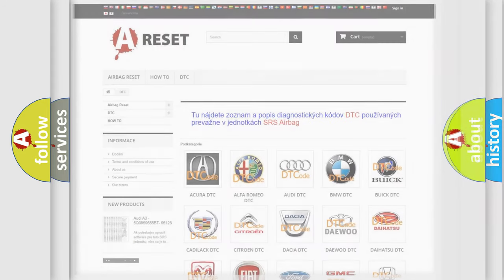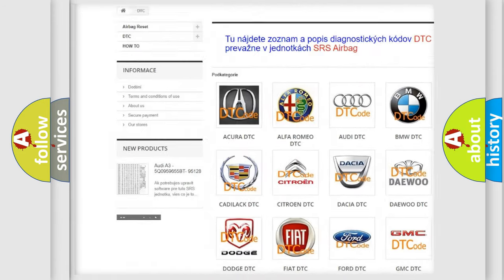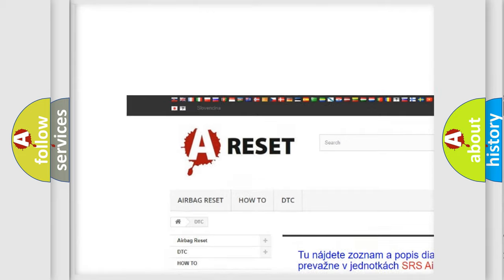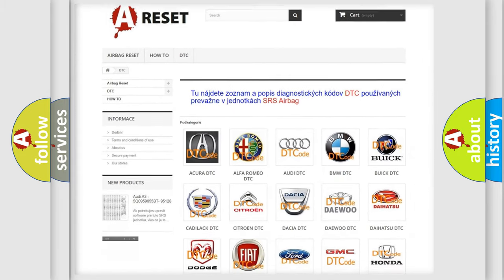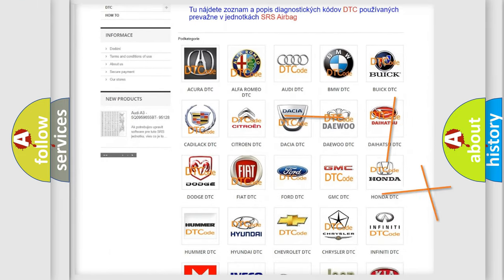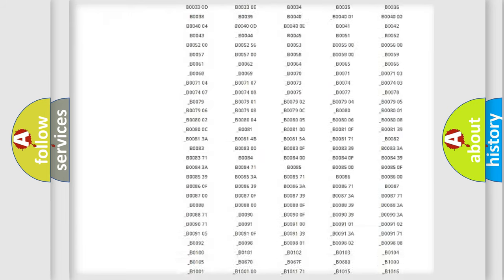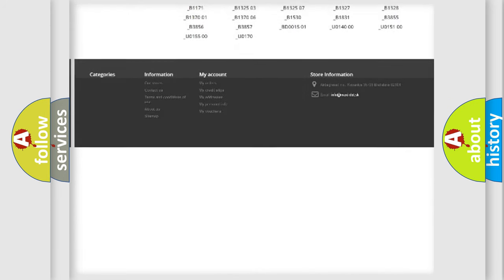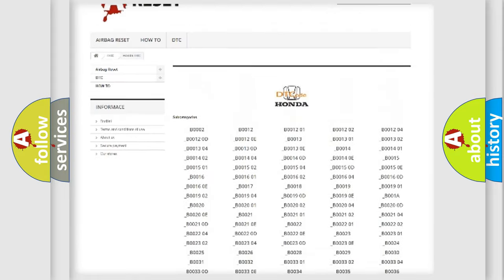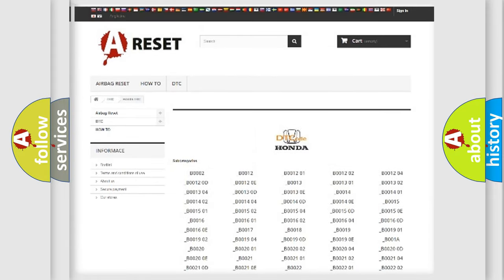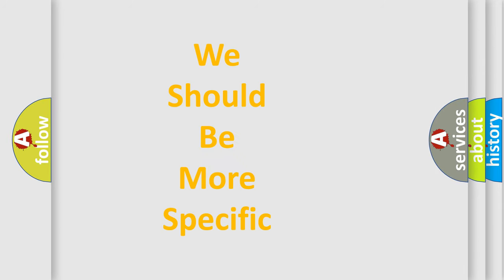Our website airbagreset.sk produces useful videos for you. You do not have to go through the OBD2 protocol anymore to know how to troubleshoot any car breakdown. You will find all the diagnostic codes that can be diagnosed in Honda vehicles, and also many other useful things. The following demonstration will help you look into the world of software for car control units.